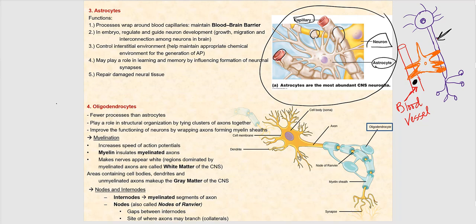Another function of astrocytes is that in the embryonic stage they regulate and guide neuronal development, ensuring proper interconnections between neurons in the brain. They also control the interstitial environment — basically, what the neuron is exposed to. A fourth function is that astrocytes may play a role in learning and memory by influencing the formation of neuronal synapses. Finally, astrocytes repair damaged neural tissue.